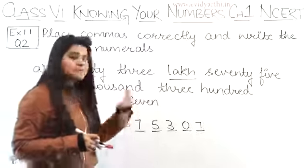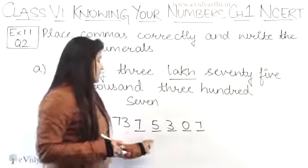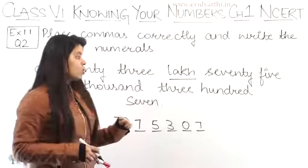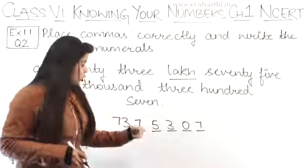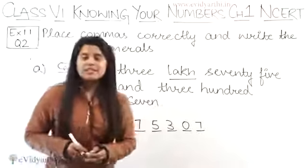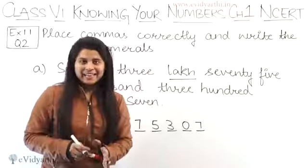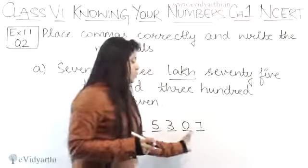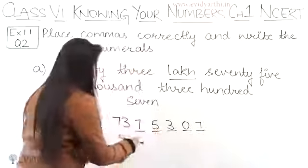So this is the best method. Because 73 lakh means that 5 digits should come. Here is 75,000. It is only 75,000. So we will write 7 here. That will make you understand if there are types of questions come. Okay, now we have 7 3 7 5 3 0 7. This is our digit.